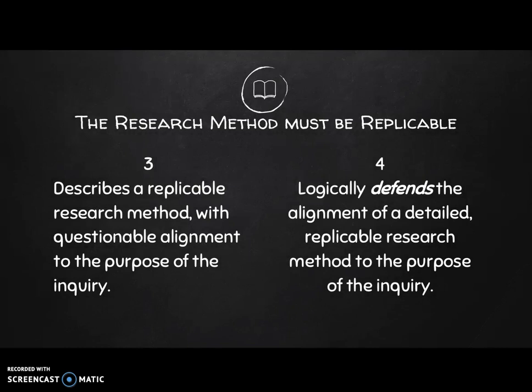I pulled these two excerpts from the holistic rubric for AP Research. For a score of three, one of the elements that must be present is it describes a replicable research method with questionable alignment to the purpose of the inquiry. To move toward four and then possibly to five, I need to logically defend the alignment of a detailed replicable research method to the purpose of the inquiry. This is the dividing line for most research projects — to get out of the category of a two and move into a three, it needs to at least be a replicable research method, even if it's a questionable alignment.